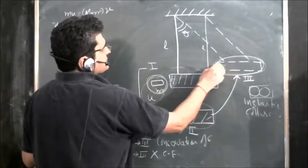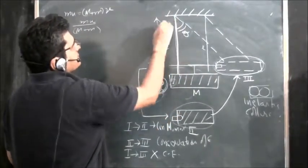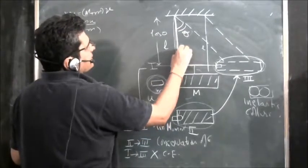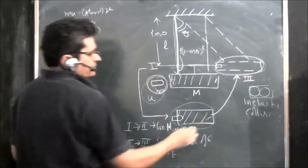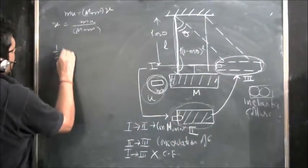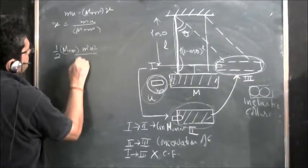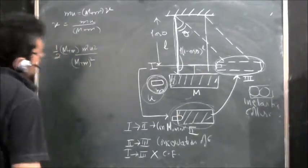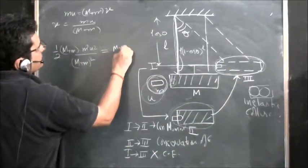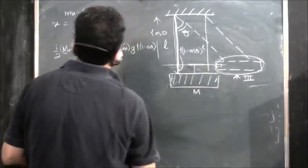Now at stage two, the bullet and body are moving together with velocity V. They combinedly reach a height of L(1 − cosθ). Applying conservation of energy between stage two and three: half (M + m)V² equals (M + m)gL(1 − cosθ). Substituting V = mU/(M+m), we get m²U² / (M+m)² = (M+m)gL(1 − cosθ).